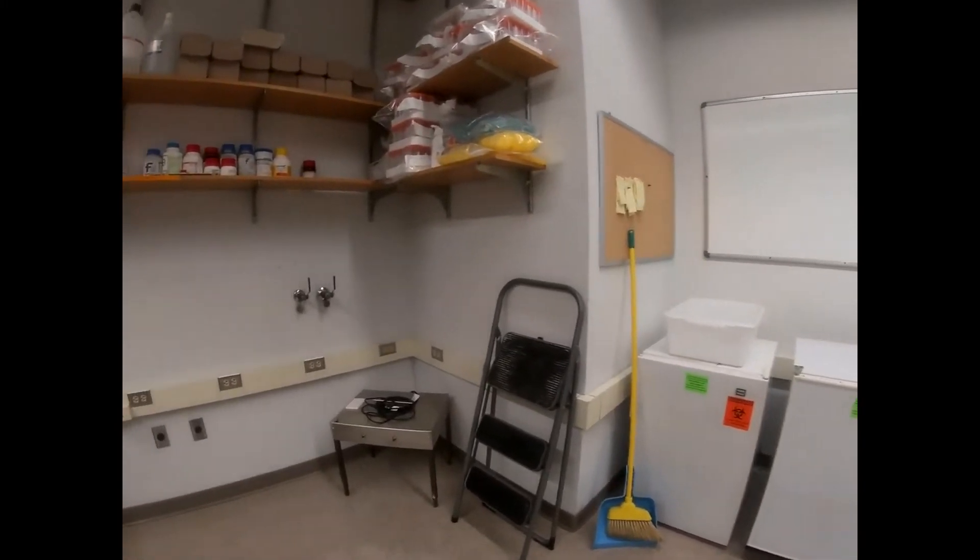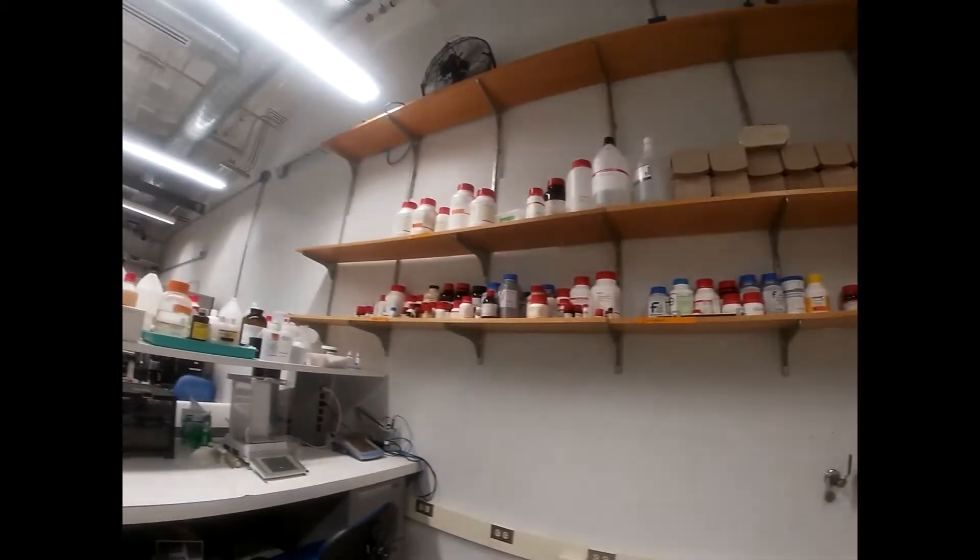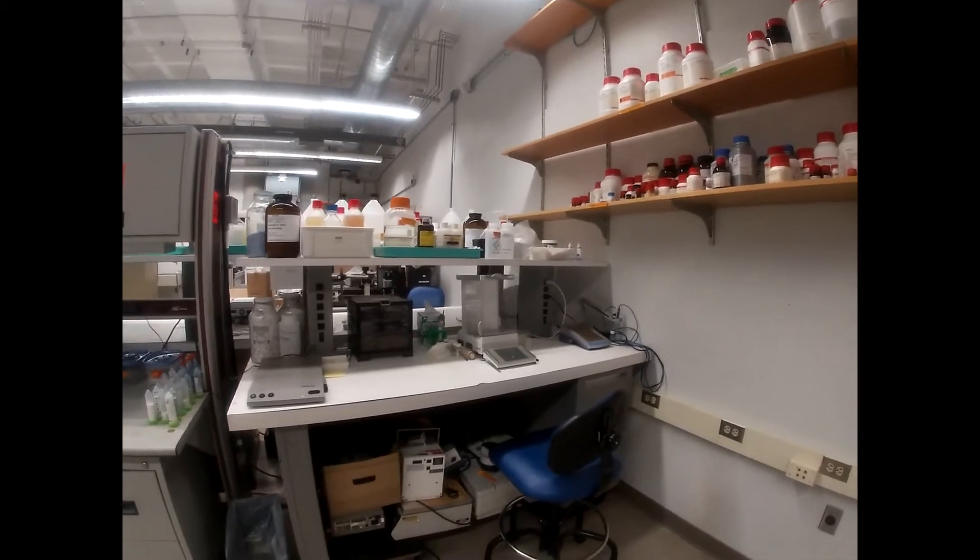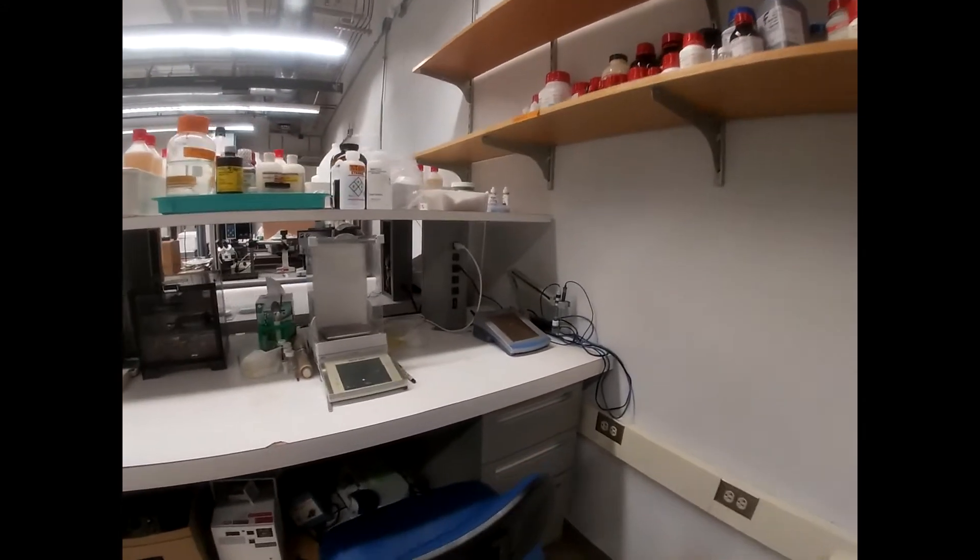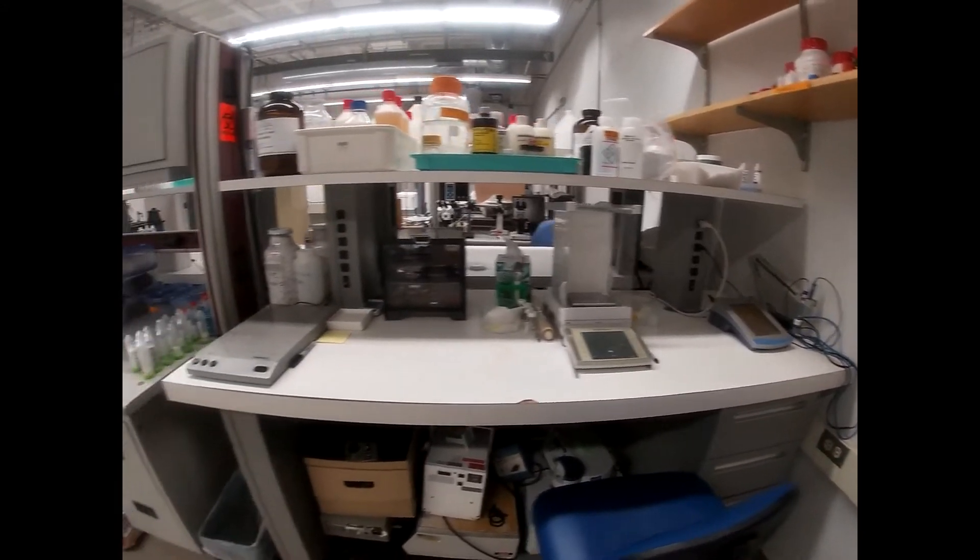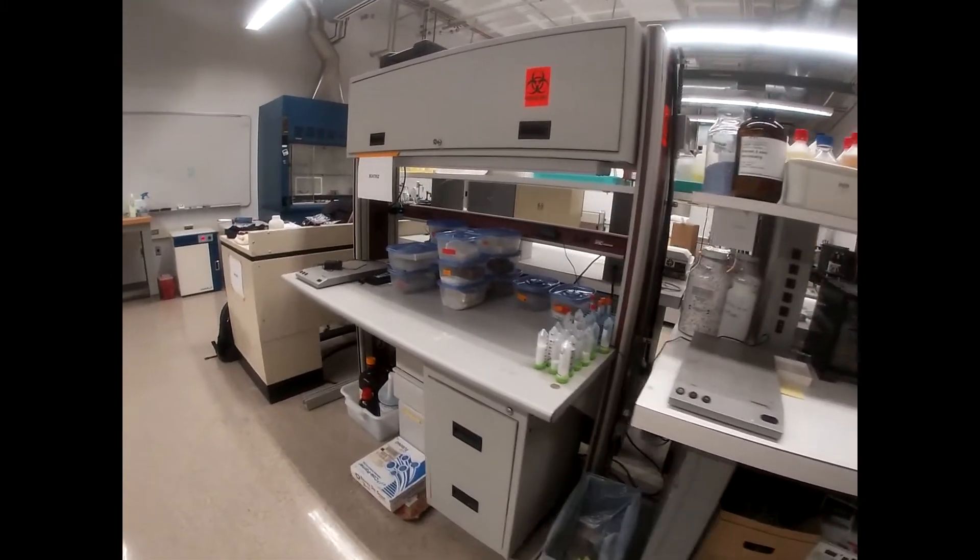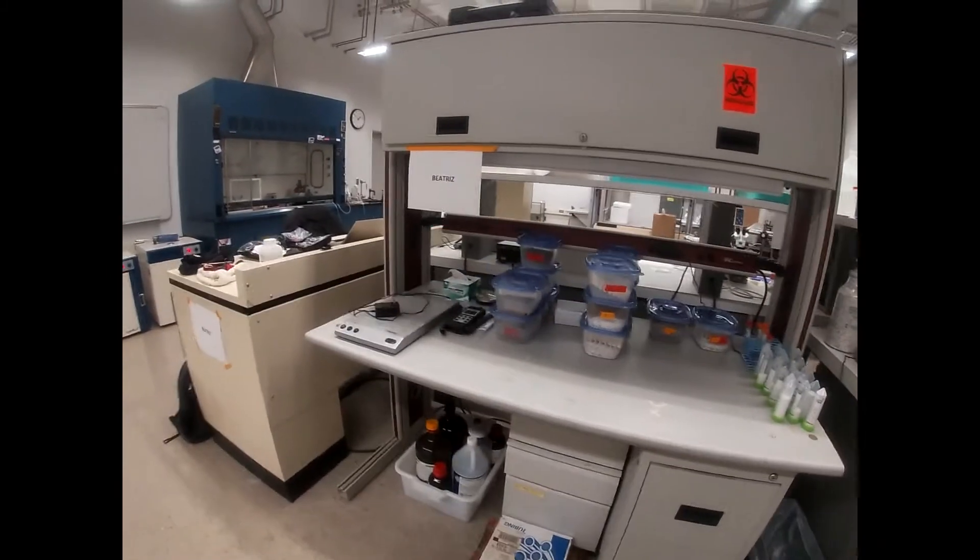Here you can see where we store our fridges and freezers, our chemicals, and here we have a pH meter and our scale. This is also where we store some of our desiccation chambers and other chemicals.